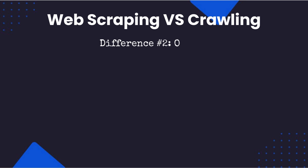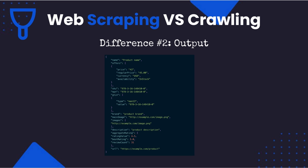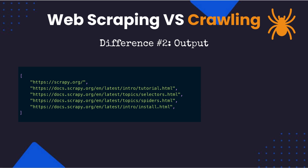Difference number two: the data they output. You can more clearly see the differences between web scraping and web crawling from the data they output. Here is the typical output of a web scraper designed to extract product data from an e-commerce product page. In comparison, a web crawler will typically return a list of URLs for the pages it has discovered on the target website.